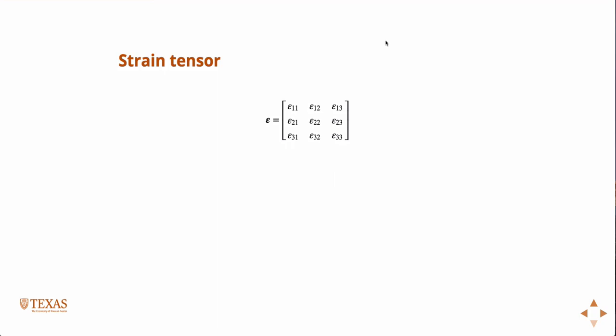So we just looked at the XY component there, but we could look at the, if we had a third dimension, we could look at the YZ and whatnot. And so ultimately, just like the stress tensor has nine components, you'd get a strain tensor that has nine components.